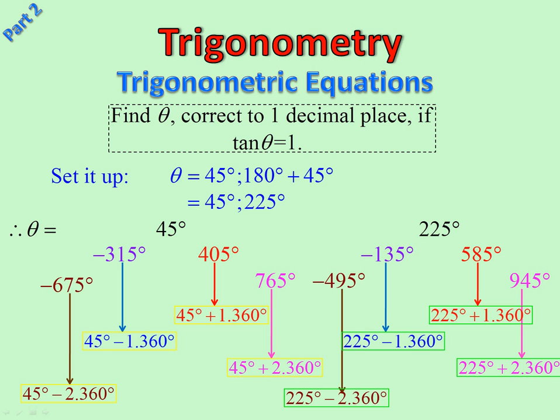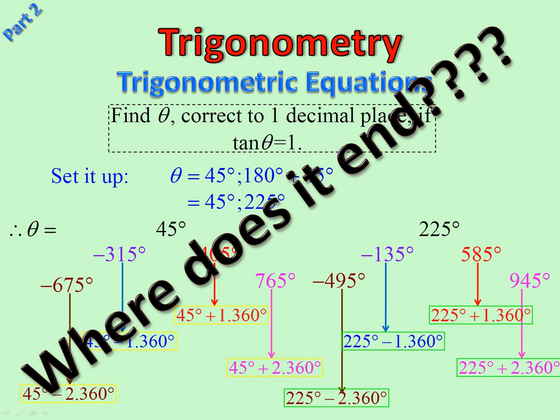225, we can do the same. So there we are. There are another 1, 2, 3, 4, 5, 6 and 6 is 12 answers. So now we have 14 answers. But we haven't finished there. What if we added another 360 on here? What if we took off another 360? What about if we took off 50 360s? Still correct. Oh dear.